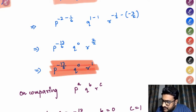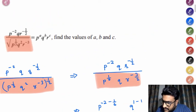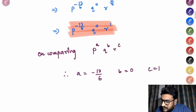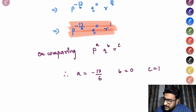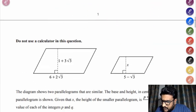Now on comparing with our, on comparing this with the question given over here, that is P to the power A, Q to the power B and R to the power C, we can say the value of A is -13/6, value of B is 0 and value of C is 1. Clear, simple. So first two questions based on indices we have done.